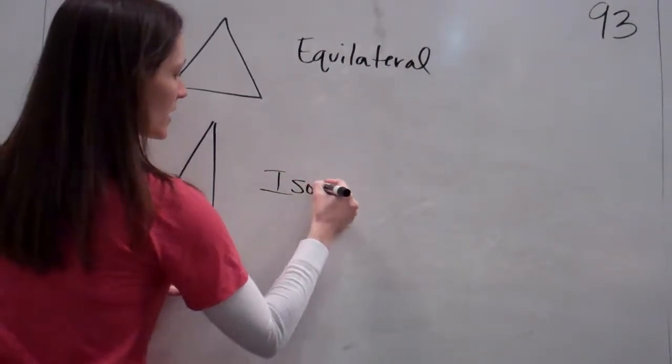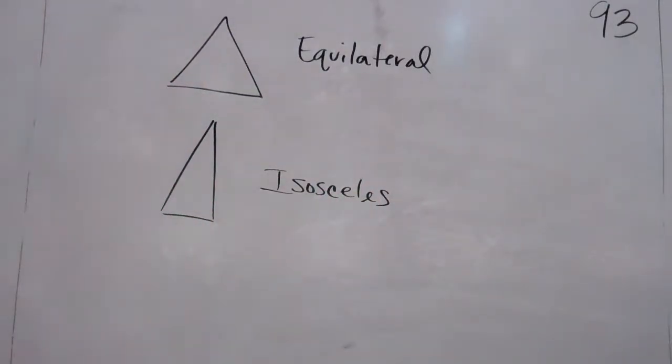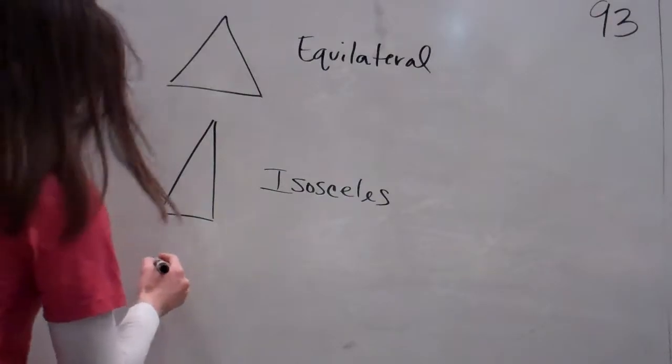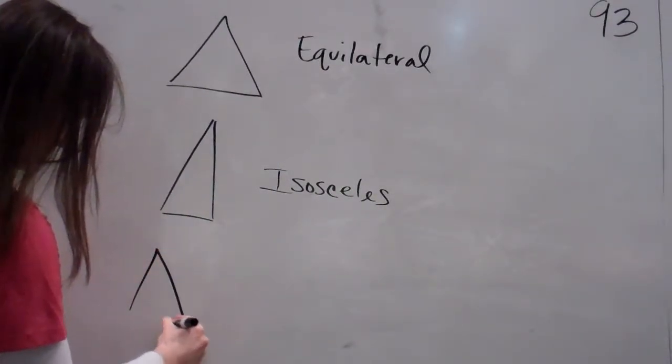This one's called isosceles. Isosceles, okay? An isosceles has two lines that are the same length, but one of them is different. And then the last one is... Oh dear.